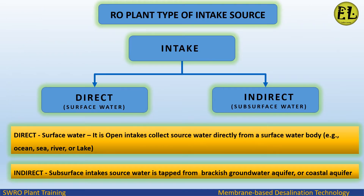Intake systems can be classified into two main types: direct intake system (surface water) and indirect intake system (subsurface water). Direct surface water intakes are open intakes that collect source water directly from a surface water body, such as an ocean, sea, river, or lake. Indirect subsurface intakes tap source water from brackish groundwater aquifers or coastal aquifers.